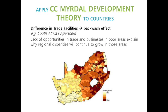Last but not least, lack of opportunities in trade and businesses in poor areas explains why regional disparities will continue to grow in those areas. In the case study of South Africa's apartheid, the segregation between ethnic groups from the Dutch era up until the 1990s has led to a backwash effect — that is, the higher crime rates in the population of poor neighborhoods.